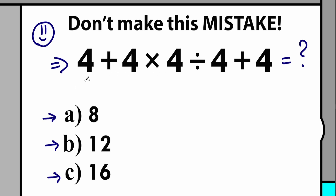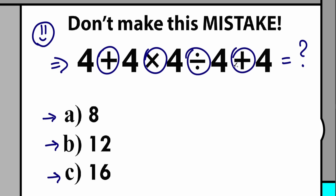Here's our question — you can see it right here in the middle of the screen. We have a lot of mathematical operations: we have addition, multiplication, division, and addition once more. What makes all the difference is the order we do this problem. Do we do addition first, or multiplication first? Do we do division first, or addition from right to left? It turns into a big argument.